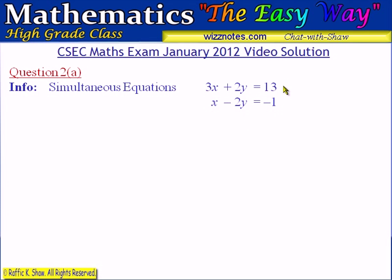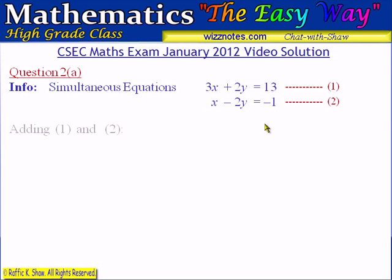These are the simultaneous equations. If we observe, we have a plus 2y in the first equation and a minus 2y in the second equation. So we realize we can eliminate y from these two equations if we simply add them. We're going to add equation 1 and equation 2 to eliminate y.